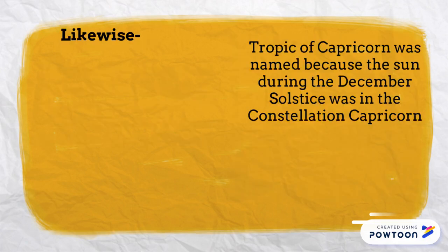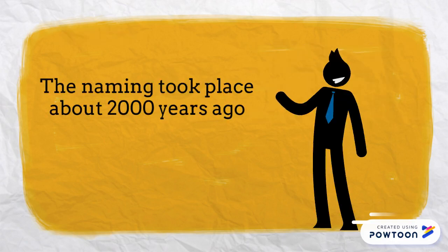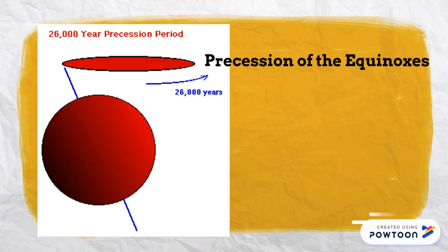Likewise, the Tropic of Capricorn was named because the sun, during the December solstice, was in the constellation Capricorn. Now this naming took place about 2,000 years ago, and because of the precession of the equinoxes,